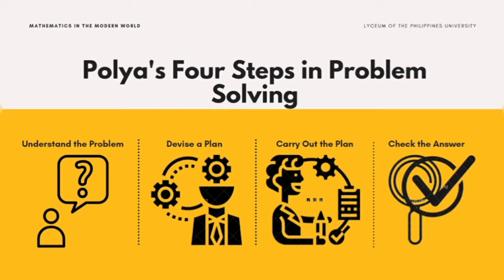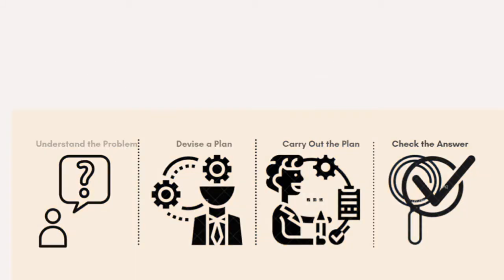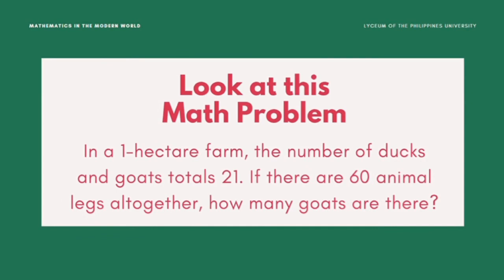To further understand how to use Polya's four-step problem-solving process, let's have an example. Look at this math problem — I'll be reading it: In a one-hectare farm, the number of ducks and goats totals 21. If there are 60 animal legs altogether, how many goats are there? So in solving the problem, we'll be applying the four steps in problem-solving made by Polya. Step 1: understand the problem.